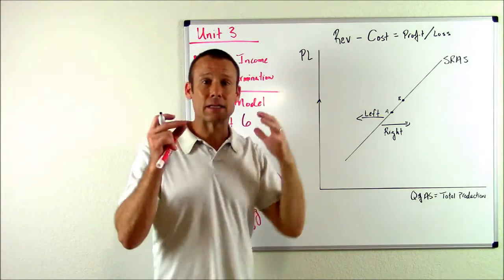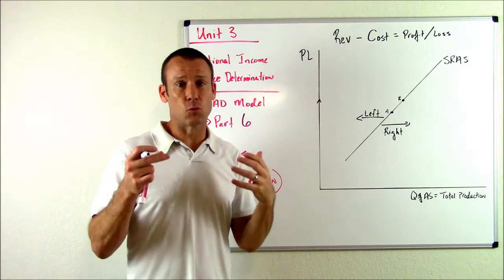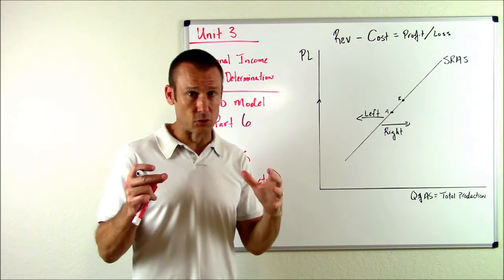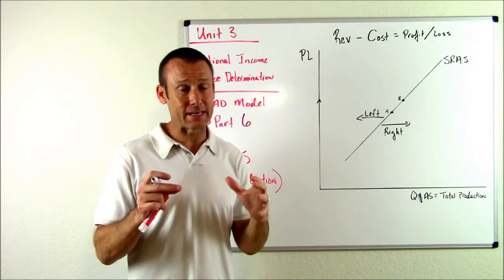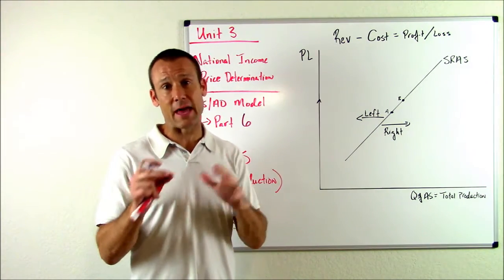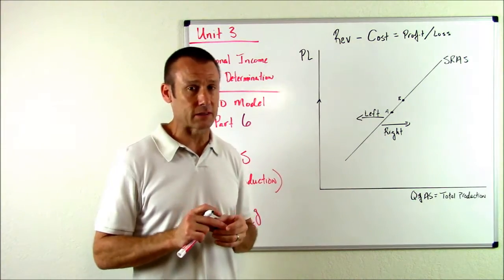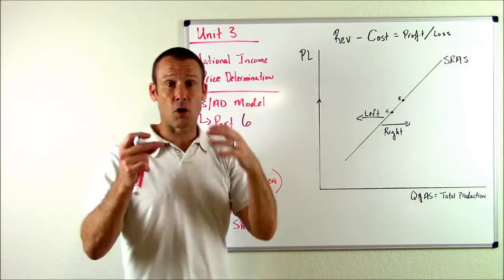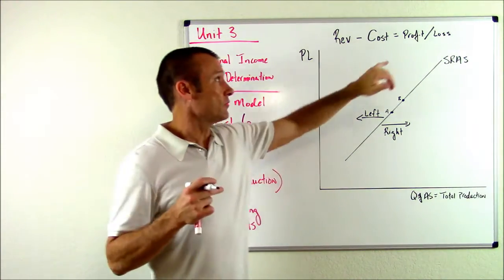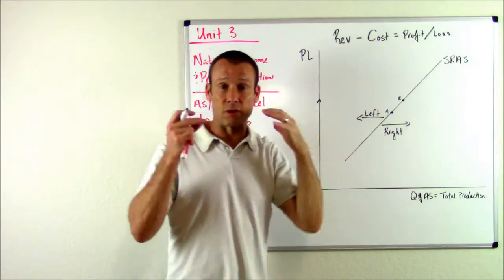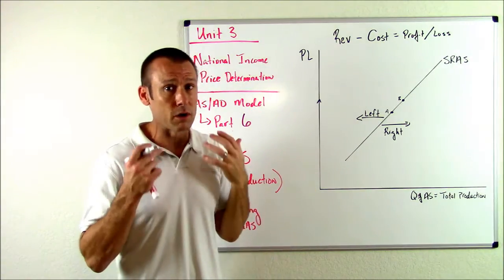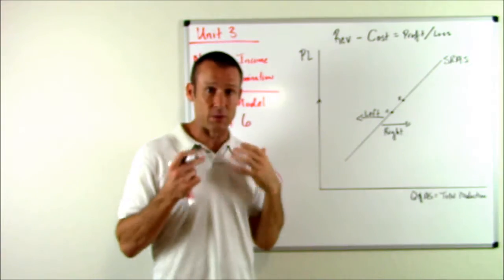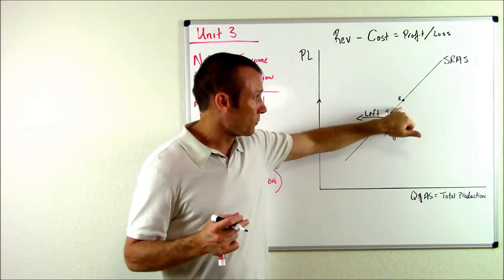And costs lag behind. Their wages, specifically, that's a huge cost for businesses. It's sticky. In the short run, they lag behind changes in the price level. So price level goes up, costs don't go up by as much. So now we have this ability to get some profits by producing more. And so that's what businesses will do. They will produce more and we'll move from A to B.